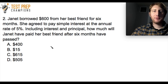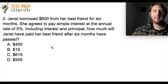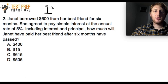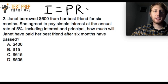Question number two: Janet borrowed $600 from her best friend for six months. She agreed to pay simple interest at the annual rate of 5%. Including interest and principal, how much will Janet have paid her best friend after six months? For any simple interest question, the formula is I = PRT. Go ahead and pause the video and try this out.